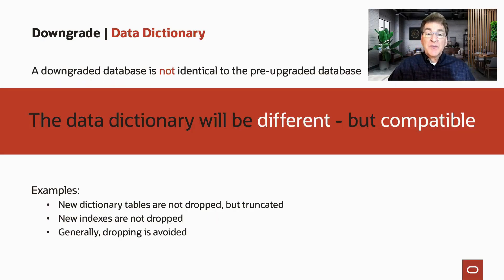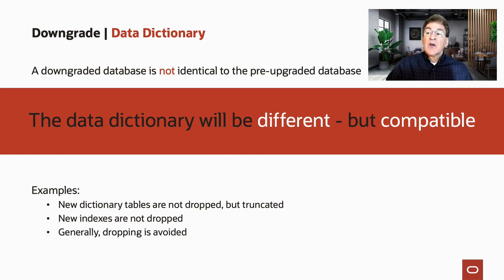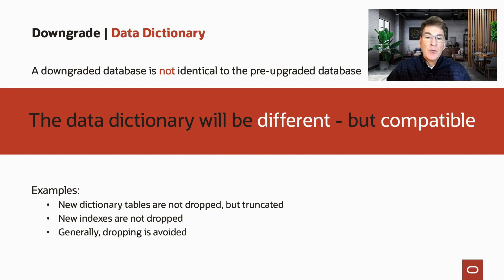Some people might expect a downgraded database to be exactly the same as it was, but that just isn't so. We remove things from the dictionary with the downgrade script, which would prevent the database from working as it had worked before. However, you will find views and other things in a downgraded database that weren't in the original release before upgrade. For instance, you might find new dictionary tables that were not dropped but were truncated, new indices that are not dropped, and in general dropping is avoided whenever possible.